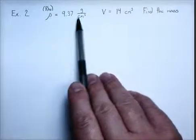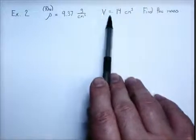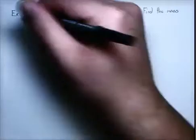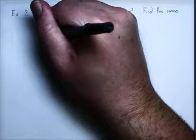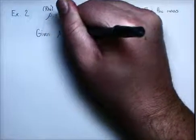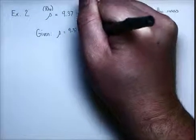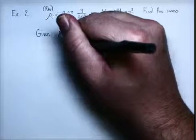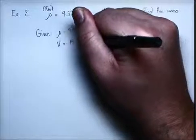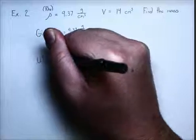Alright, so the density is 9.37 grams per cubic centimeter. Notice the units are important here. And the volume is 14 cubic centimeters. And we're trying to find the mass. So we always start out with what we're given. We're given that the density is 9.37 grams per cubic centimeter. And the volume is 14 cubic centimeters. And we want to find the mass.